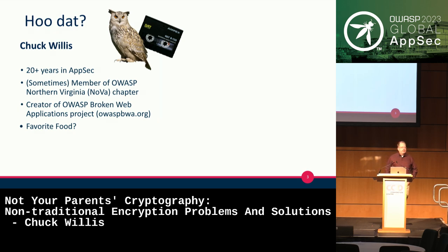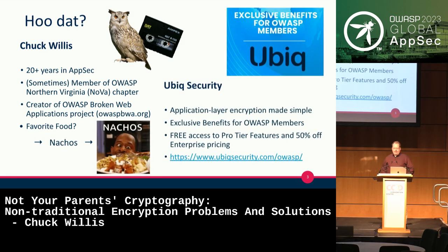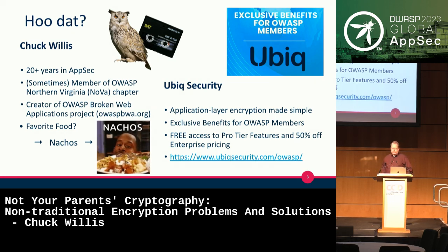So who am I? I'm based in Maryland. I'm an advisor for Ubix Security, and I was the creator of the OWASP Broken Web Apps project. Ubix is actually a partner with OWASP — we do some co-marketing and have benefits for OWASP members. Ubix is an application-layer encryption key management service. You can get free pro-tier features using your OWASP email address if you're a member.